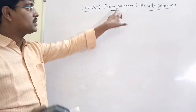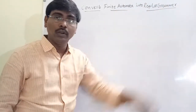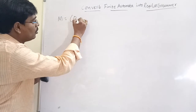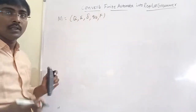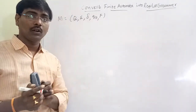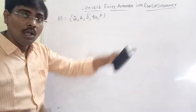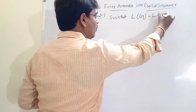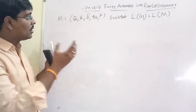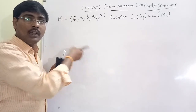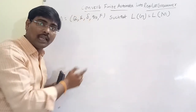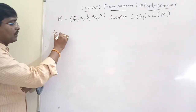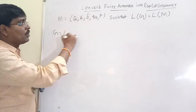Hi friends, welcome to our channel. In this session we will discuss how to convert a given finite automata into regular grammar. Suppose M is the finite automata with five tuples Q, sigma, delta, Q-naught, F. For this finite automata we have to generate a grammar such that the language accepted by the grammar is equal to the language accepted by the finite automata. After conversion, the language accepted by both must be the same.